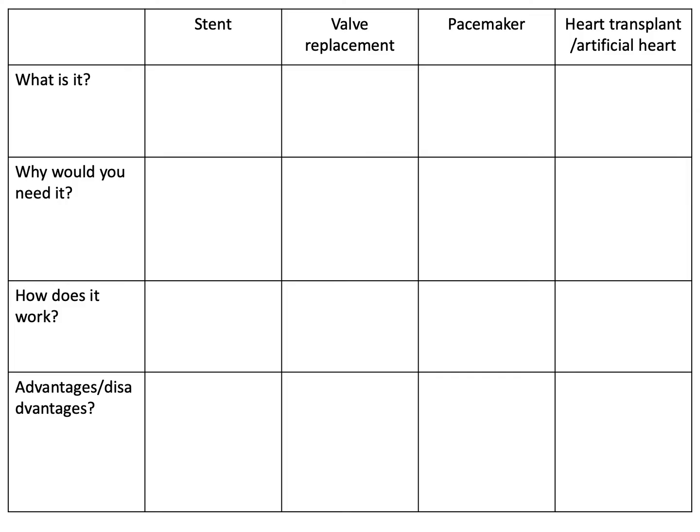Your science teacher will decide whether you're going to complete this activity. If so, you can click pause. We'll be looking at stent, valve replacement, pacemaker, and heart transplant or artificial heart. You need to state: what is it, why would you need it, how does it work, and any advantages and disadvantages. You may want to use the internet and valid resources such as BBC Bitesize.